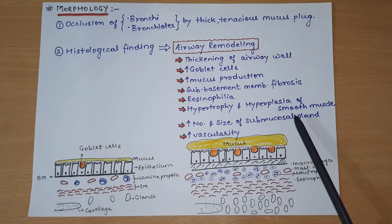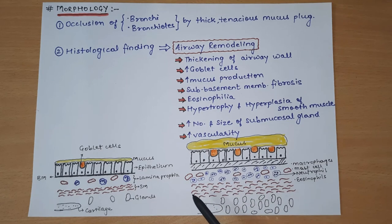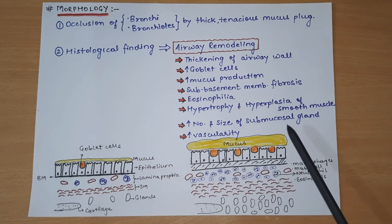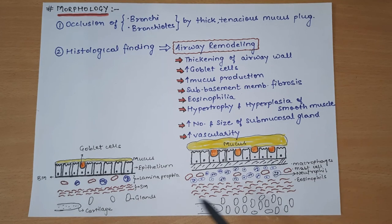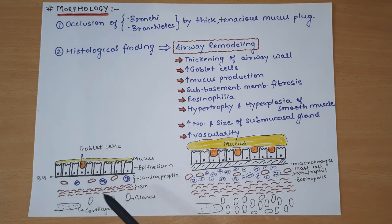Next is hypertrophy and hyperplasia of smooth muscle - more and thicker smooth muscles are seen compared to the normal airway. Next is increase in the number and size of submucosal glands - their number and size both increase in the remodeled airway. Next is increased vascularity - the blood vessel supply and vascularity of the remodeled airway is greater than that of the normal airway.